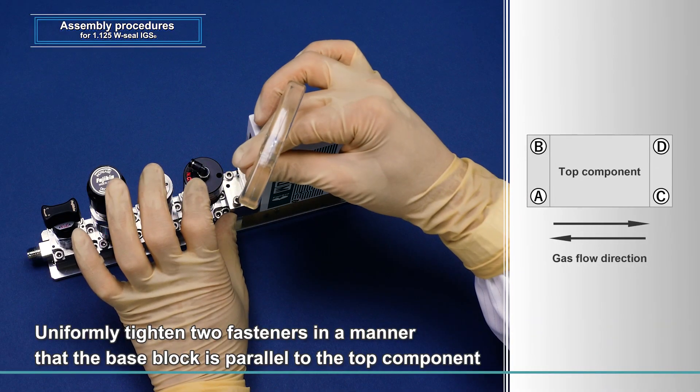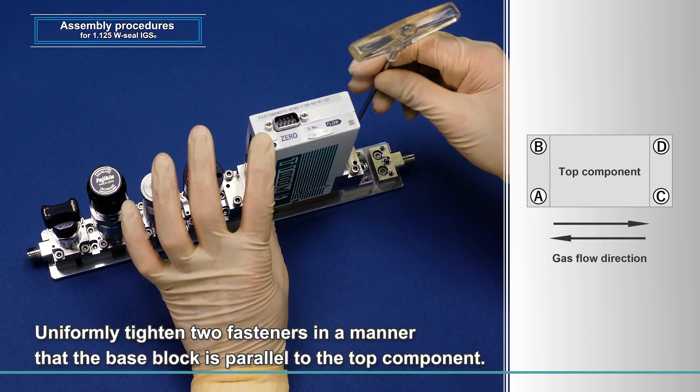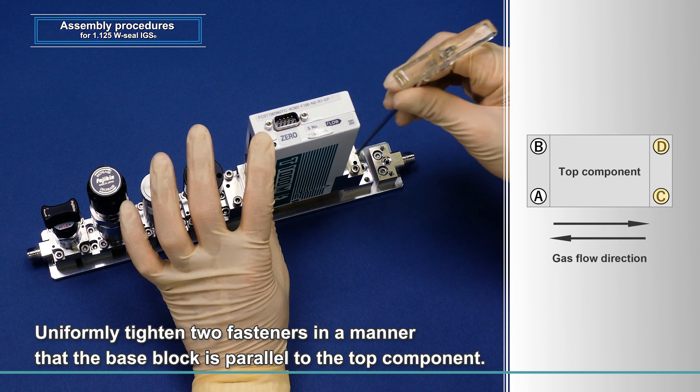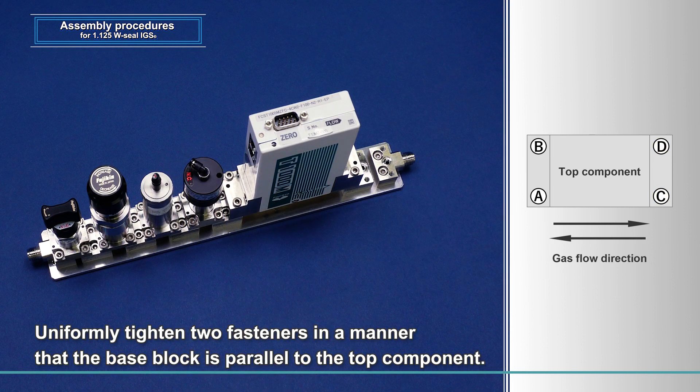The sealing ports are sealed with two pairs of fasteners, A and B and C and D. Uniformly tighten each pair of fasteners using a hex wrench to ensure that the base block and the top component are in parallel with each other.